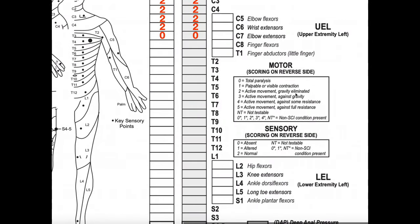On the motor scoring side: a 5 indicates active movement against full resistance; a 4 indicates active movement against some resistance; 3 is active movement against gravity; 2 is active movement with gravity eliminated; 1 is a palpable or visible contraction; and 0 indicates total paralysis. If a myotome is not testable, you put NT. An asterisk next to the score indicates a non-spinal cord injury condition causing irregularity in strength presentation.